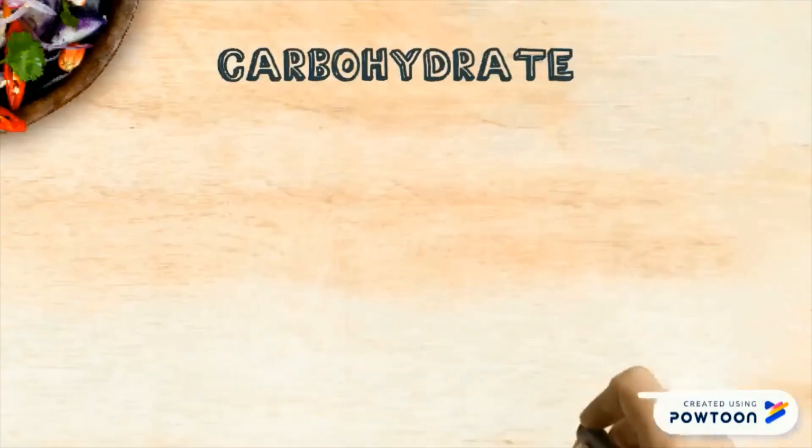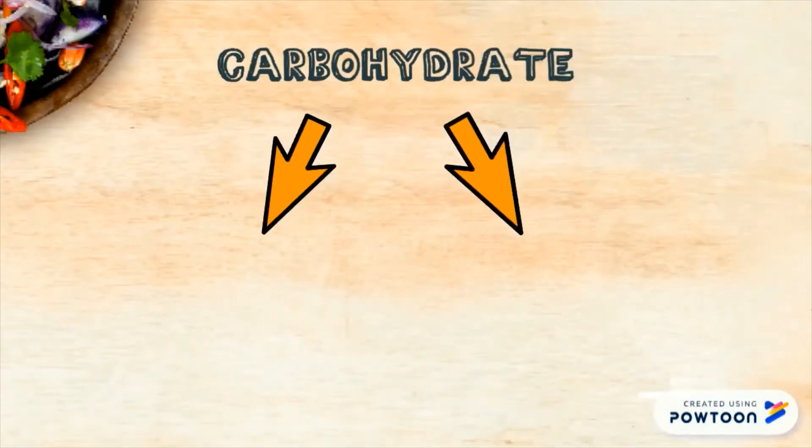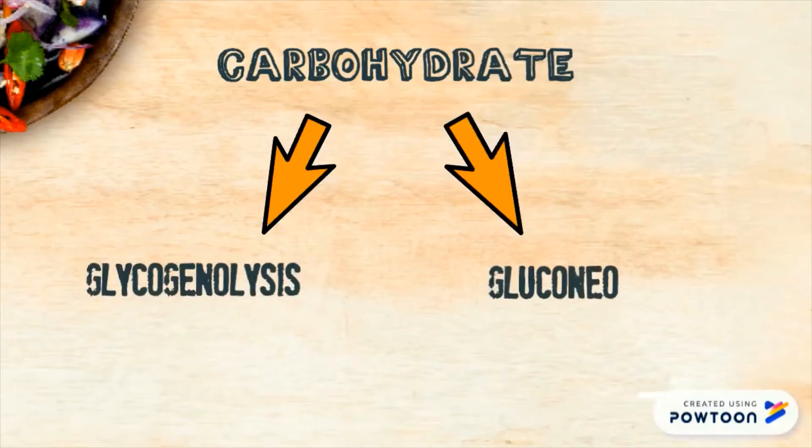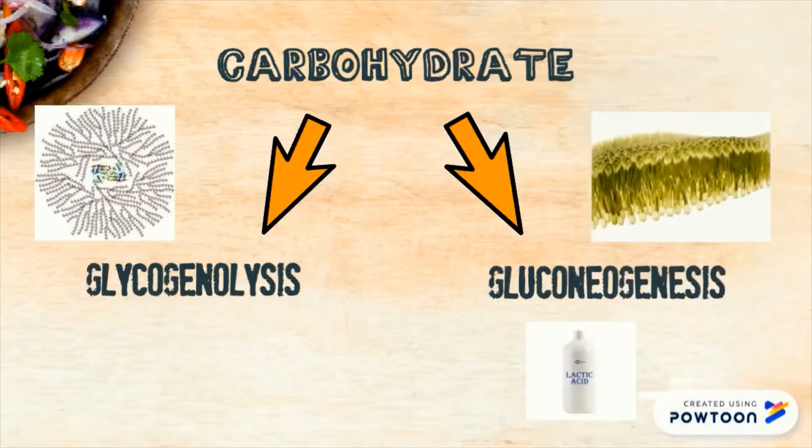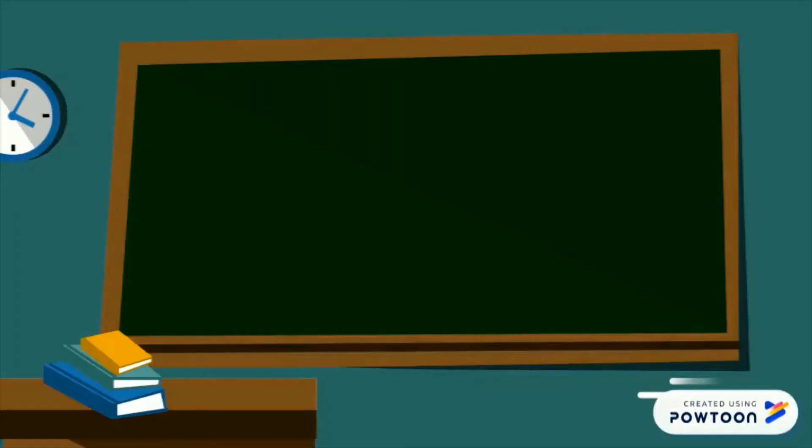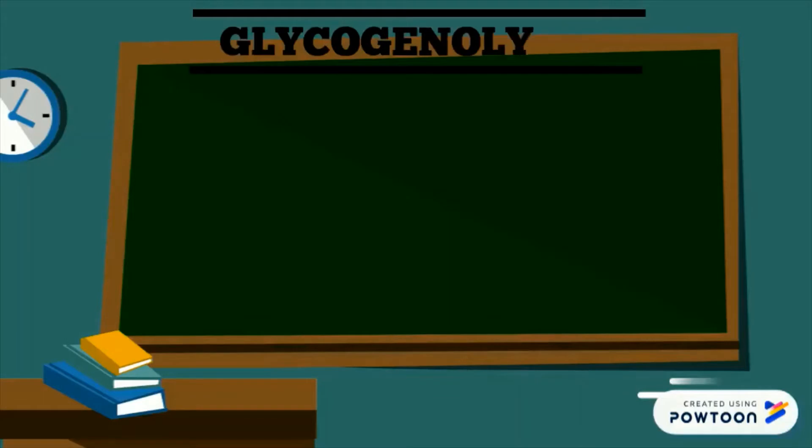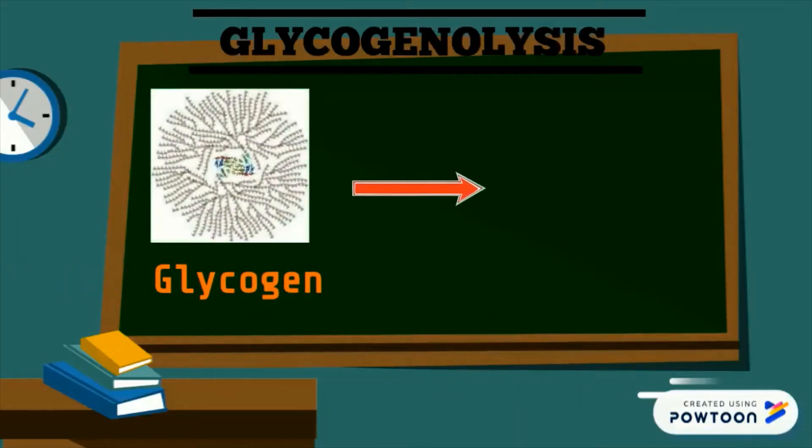Carbohydrate will undergo two processes which are glycogenolysis and gluconeogenesis. First and foremost, Joey will undergo glycogenolysis which is the breakdown of glycogen in his liver to form glucose.